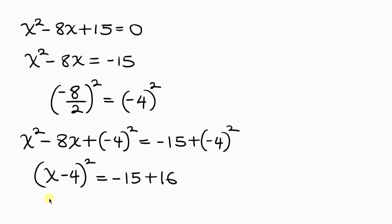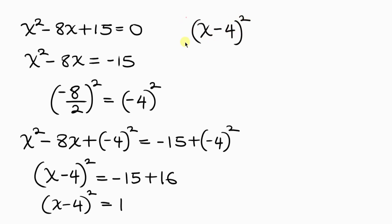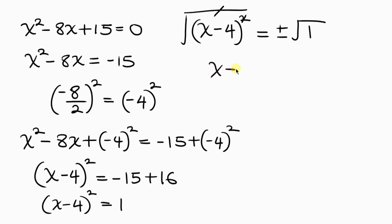To get rid of this square, we take the square root of both sides. On the left, taking the square root of (x minus 4) squared leaves behind x minus 4. On the right, we put plus or minus the square root of 1. So x minus 4 equals plus or minus 1.